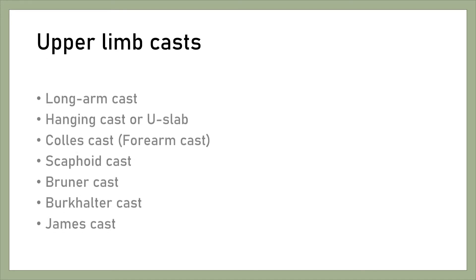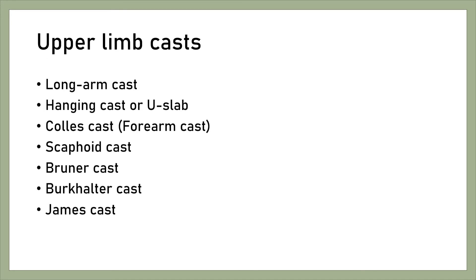Upper limb casts consist of: long arm cast, hanging cast or U-slab, Colles cast or forearm cast, scaphoid cast, Burkhalter cast, James cast, and gauntlet cast.